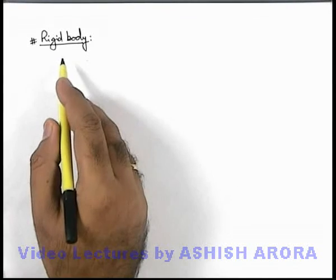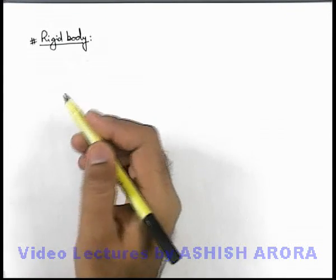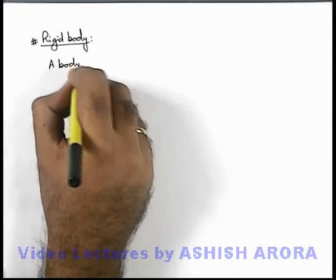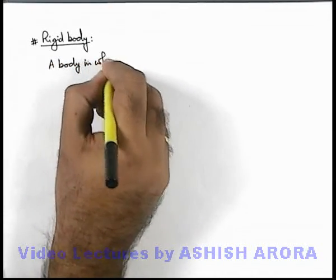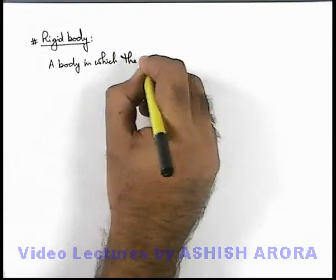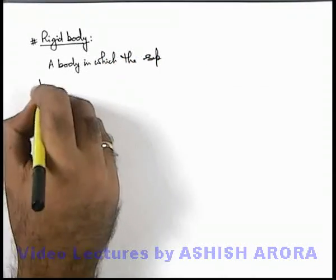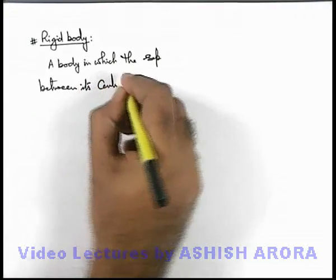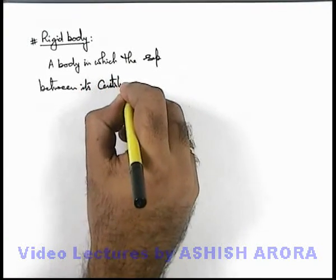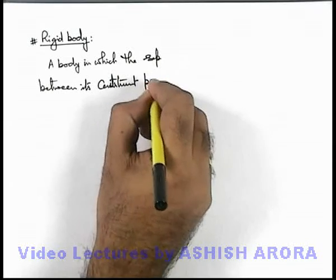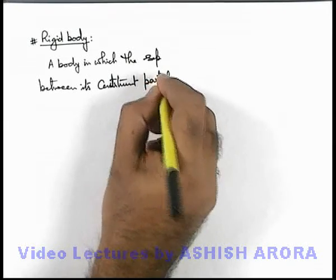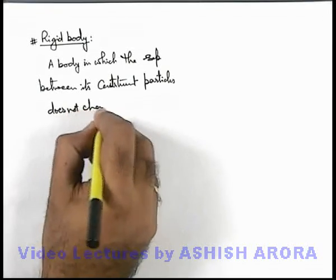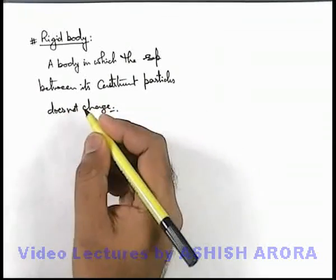Let us define what is a rigid body. A rigid body is a body in which the separation between its constituent particles does not change. This is a rigid body.